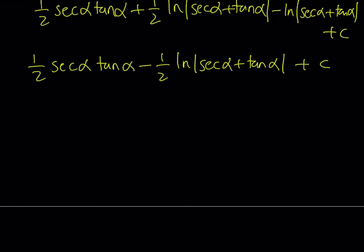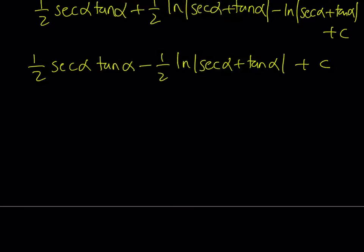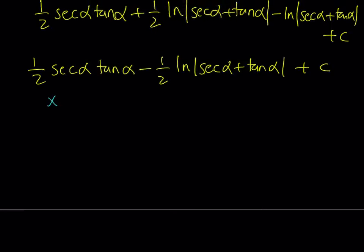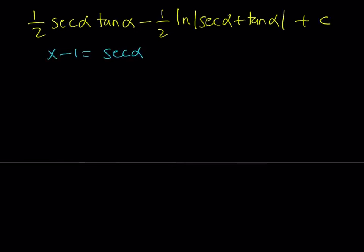We're going to back substitute. Let's remember our assumption: x minus 1 is equal to secant alpha. So let's go ahead and draw a right triangle that satisfies this.